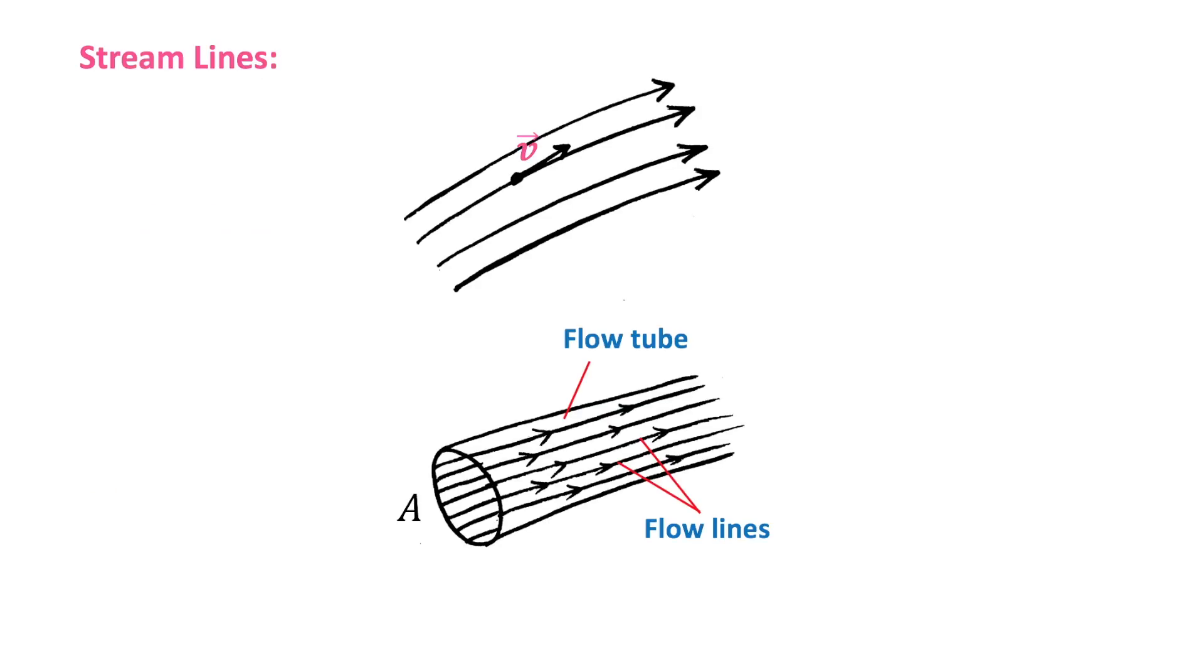So, the drawing shows the path of an individual particle in a steady flow, called a streamline. The velocity of the particle at a point is tangent to the streamline curve, and a set of streamlines passing through the edge of an imaginary area A form a tube known as a flow tube. Particles cannot flow into or out of the sides of the tube, because otherwise the streamlines would cross each other. So, this is the flow tube and this is flow lines.